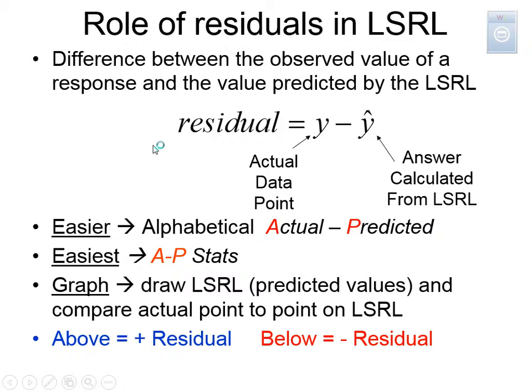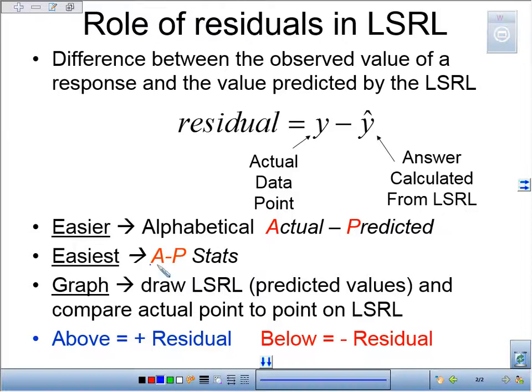We're talking about the role of residuals here. A residual is the distance between an actual data point and the answer calculated from the least squared regression line, the predicted data point. A quick, easier way to remember this: it's AP Stats, and it's always the actual minus the predicted.